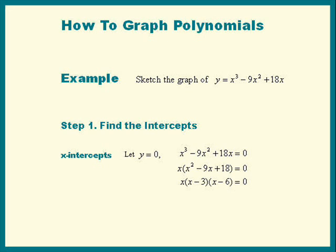That means either x is 0, 3, or 6. Now for the y-intercepts. If we set x equal to 0, all we get is y equal to 0. We already have that point. So all done with intercepts.